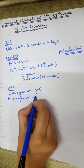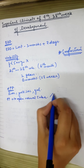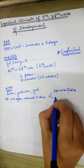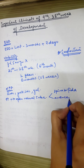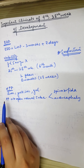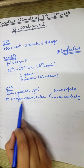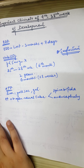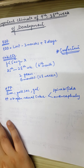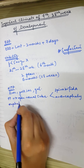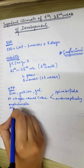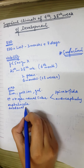Neural tube defects include spina bifida and anencephaly. Elevated AFP is associated with open neural tube defects. Alpha-Fetoprotein is also associated with omphalocele and gut-related conditions. Due to duodenal atresia, there can also be a rise in Alpha-Fetoprotein levels.